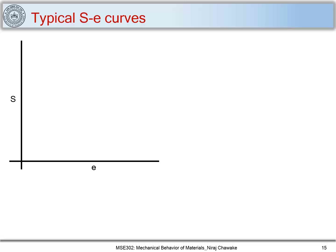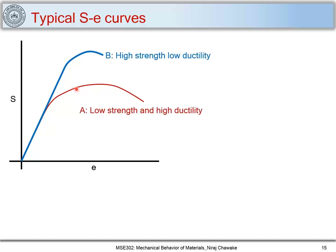Let's see how different materials behave by understanding their engineering stress-strain curves. Material A shows low strength and high ductility — low yield strength and low UTS compared to material B, but higher ductility which is strain to fracture. Material B shows high strength but low ductility. Typically A materials are ductile materials like aluminum and copper, while B are something like high-strength steel or spring steels.